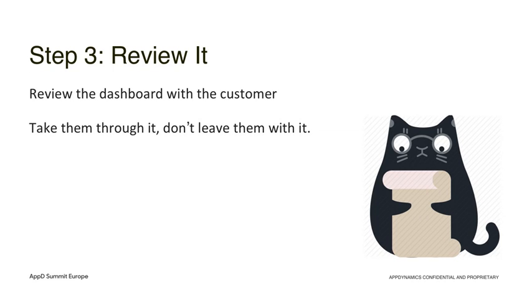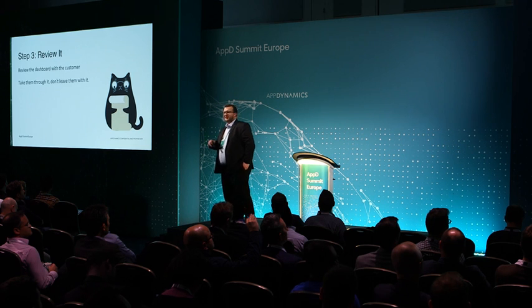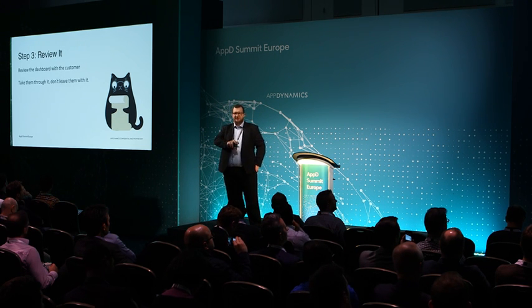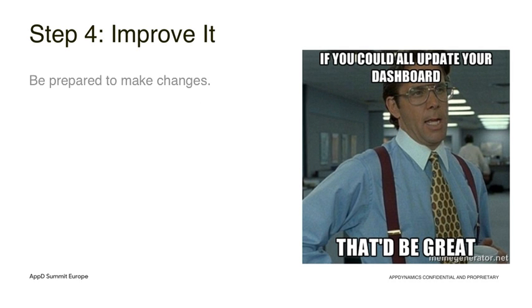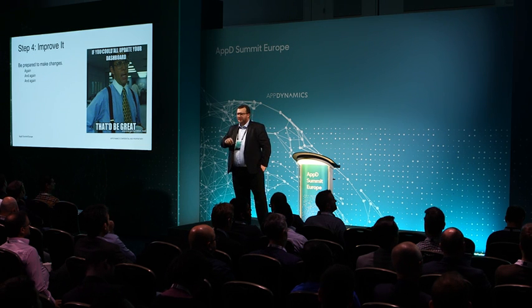Step three is to review it with the customer — sit down and say: this is what I've built you, this is how we achieve those goals we talked about in step one. It might not look exactly like the piece of paper; they might draw widgets we just don't have in AppDynamics, and that's fine as long as we achieve the same goal another way. Step four is continuous improvement — you've got to keep working on dashboards. The dashboards I've made for some customers have been good because they changed over time: people went, I like that, but can we add this bit or change that? If nobody's asking for updates, I feel like nobody's using the dashboard. Be prepared to make changes, create copies for different people, and make it more specific to them.